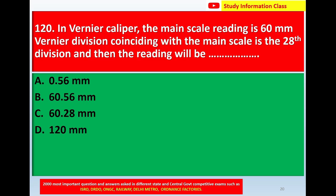Question number 120: in a vernier caliper, the main scale reading is 60 mm, the vernier division coinciding with the main scale is the 28th division. The total reading will be — the correct answer is Option B, 60.56 mm.